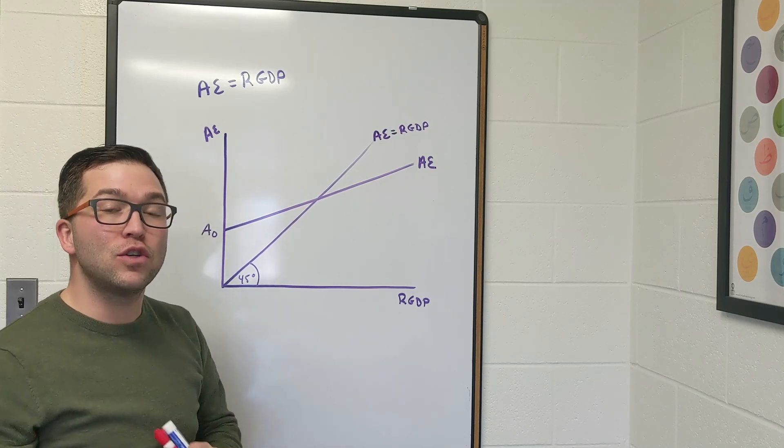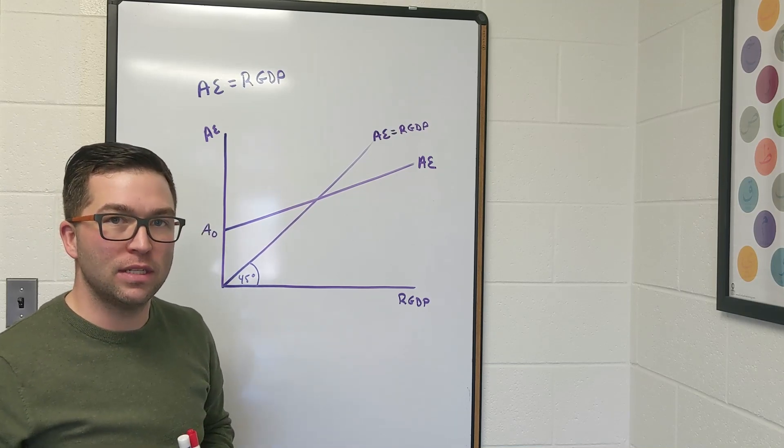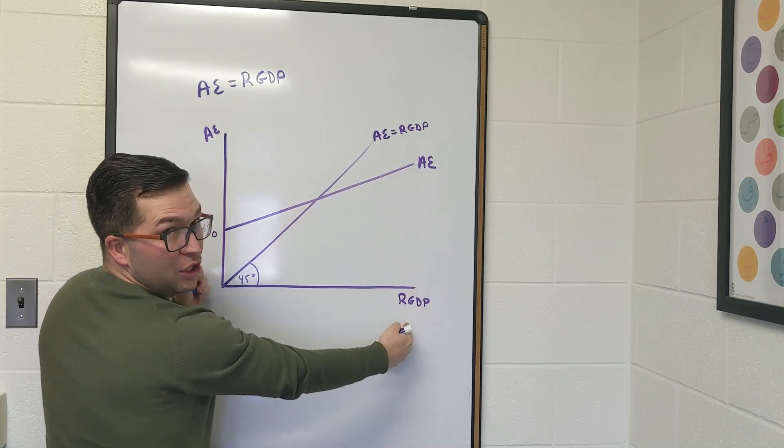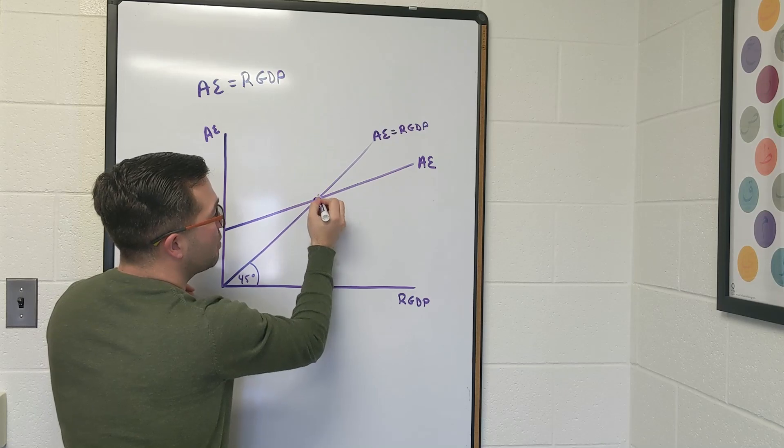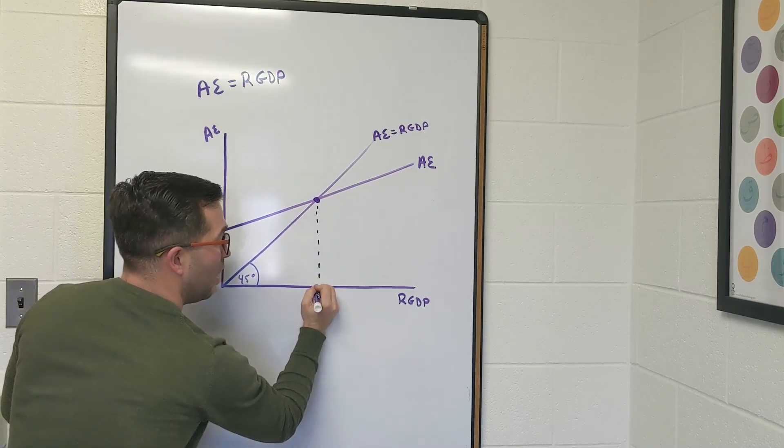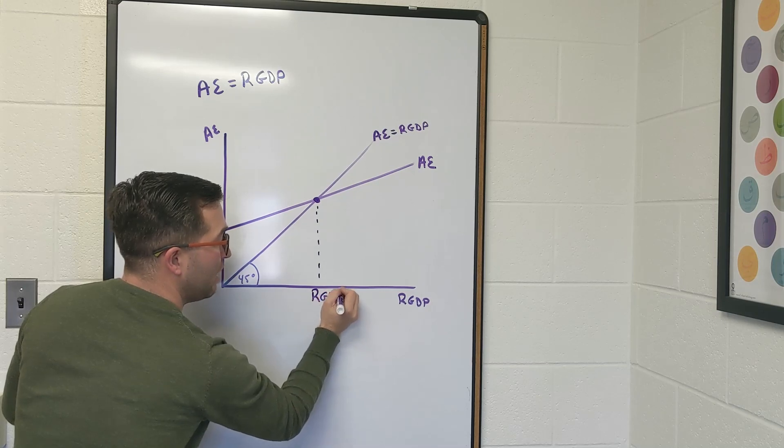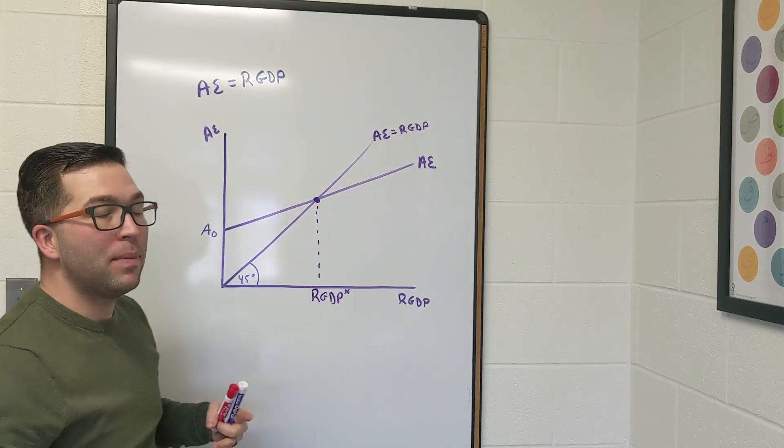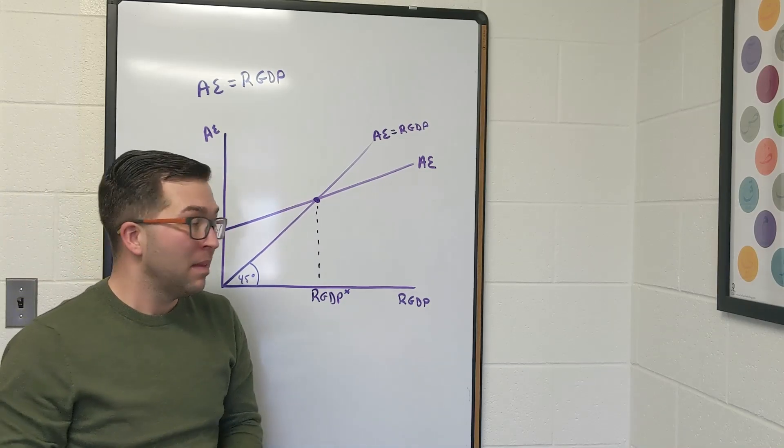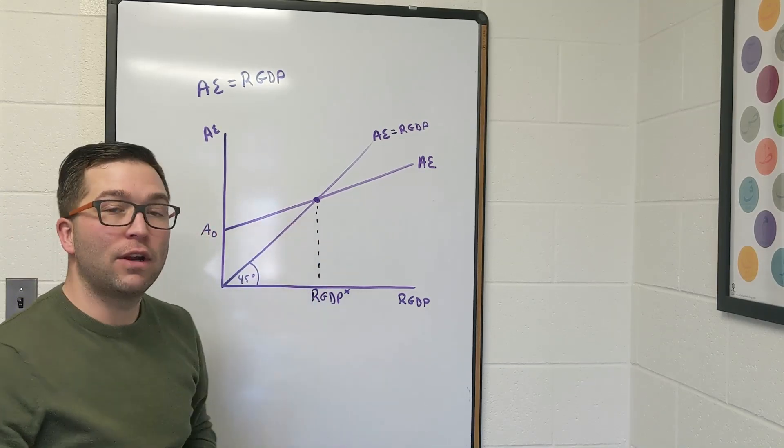As previously stated, that means there's no unplanned change to inventories. If we graphed aggregate expenditure versus real GDP, this point right here where they cross is the level of real GDP, I'll put a star on it, that puts us into the macroeconomic equilibrium. That's pretty simple, it's the only point where they cross.